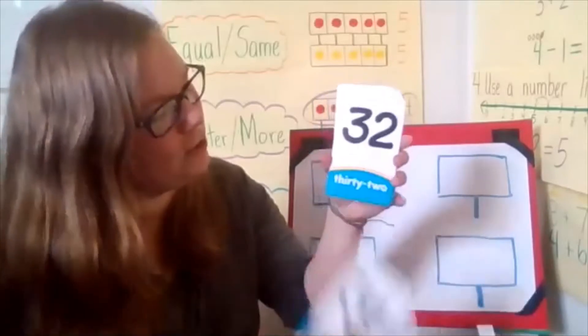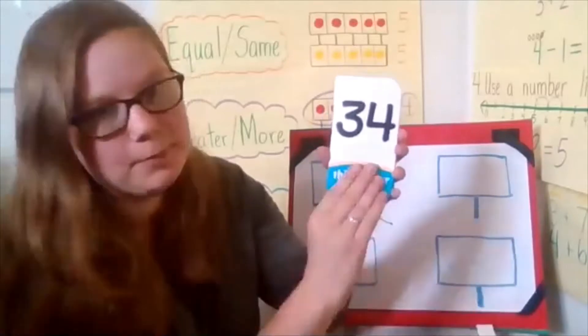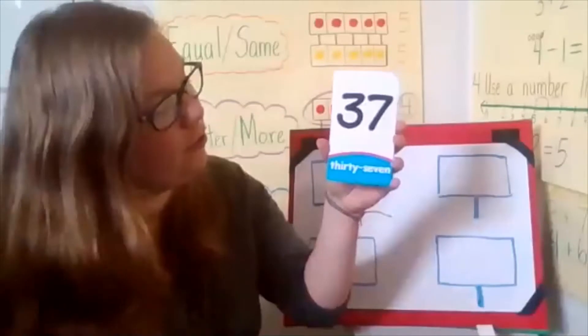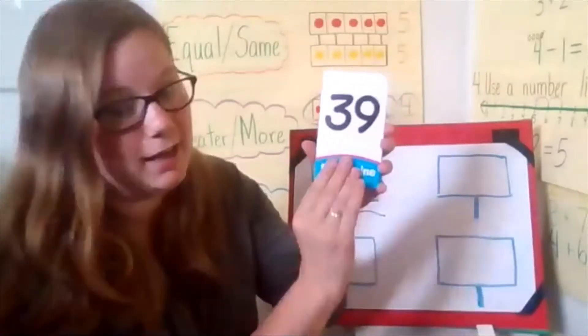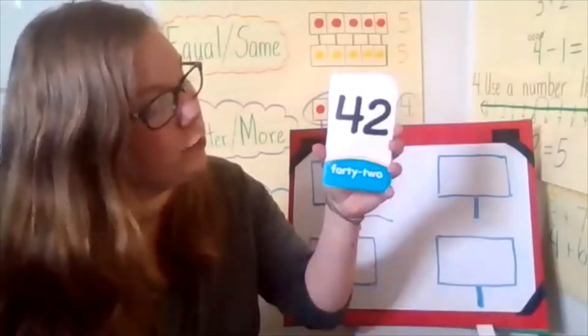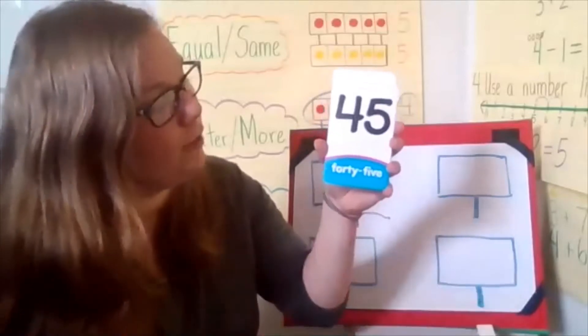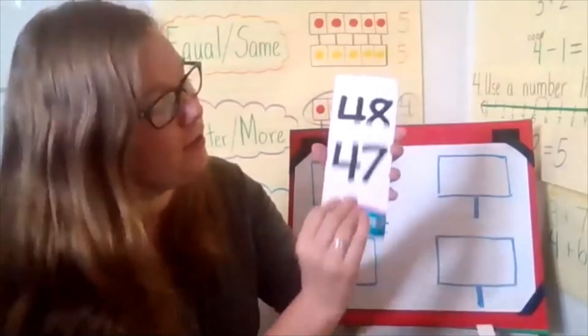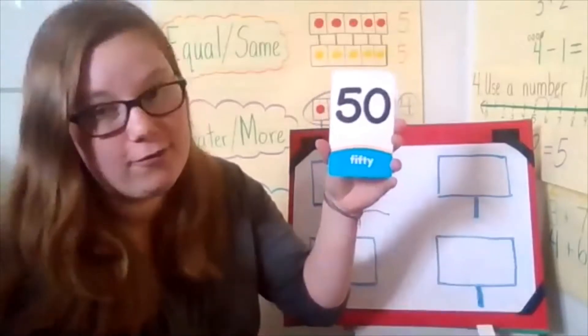Thirty-one, thirty-two, thirty-three, thirty-five, thirty-six, thirty-seven, thirty-eight, thirty-nine, forty, forty-one, forty-two, forty-three, forty-four, forty-five, forty-six, forty-seven, forty-eight, forty-nine, fifty.